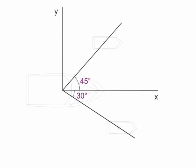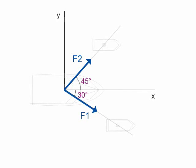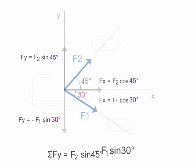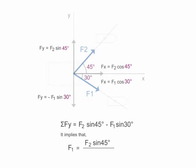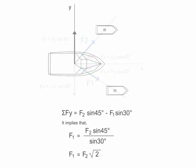Let the two forces be F1 and F2. Then resolve these forces into their components along x axis and y axis. So summation of Fy is given as follows. From this we can say that F1 equals F2 times √2. As the boat is not moving along the y axis, there is no resultant force along y direction.